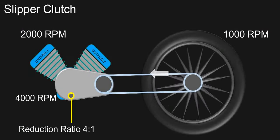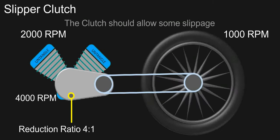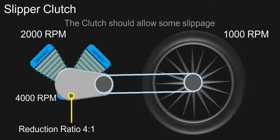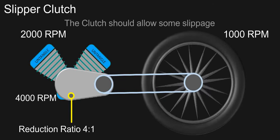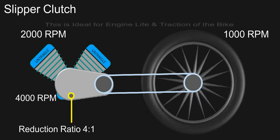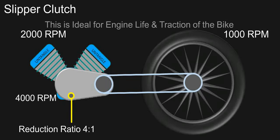So when the wheel tries to run the clutch output shaft faster than the engine is trying to run it, the clutch should allow some slippage to help match the speed more gradually, rather than suddenly compelling them to match speed. This is ideal for engine life as well as traction of the bike, reducing the risk of an accident.